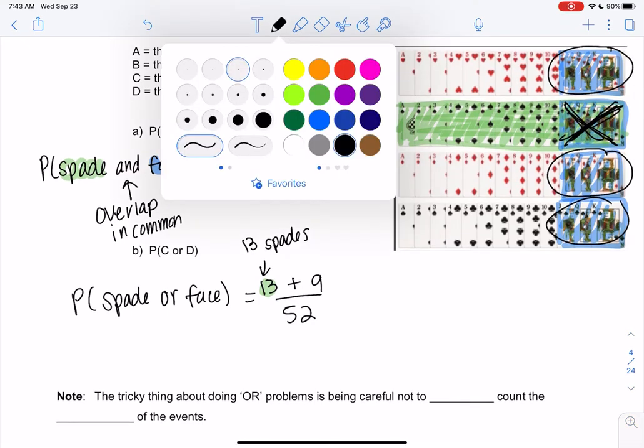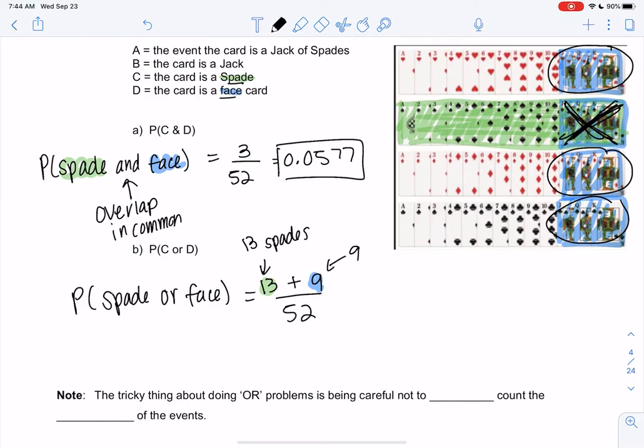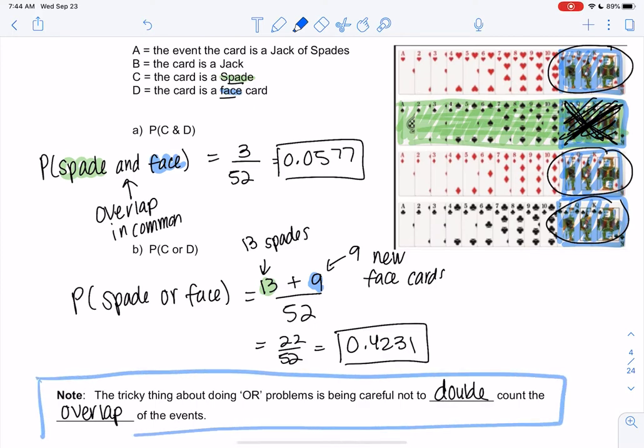So yes, there are 12 face cards, but three of them were already counted. So don't double count them. The tricky thing about or problems is being careful not to double count the overlap. They've already been counted, so don't count them twice. So 13 plus 9 gives me 22, and we'll divide that by 52. 0.4231. This is why ors are challenging, and I think ands are actually easier. So be extra careful not to double count.